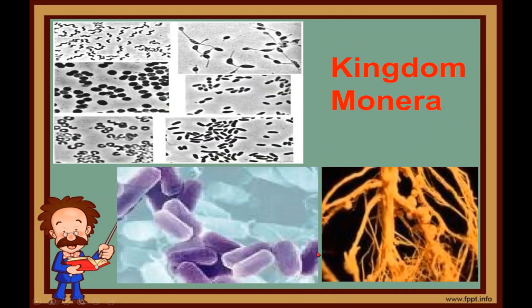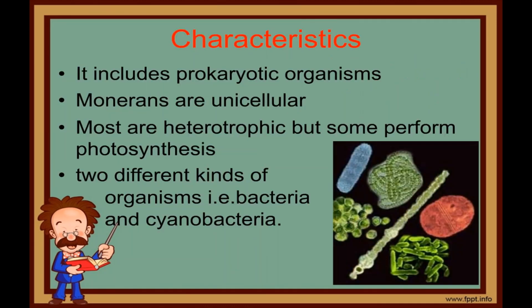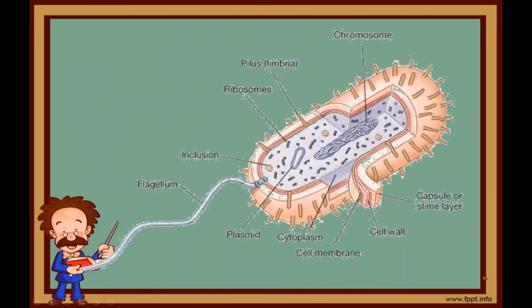The first one is Kingdom Monera. They are bacteria — unicellular and prokaryotes. They are omnipresent, meaning they are widely present in the universe. They are photo-autotrophs or chemo-autotrophs. Two different types of organisms are included: bacteria and cyanobacteria.